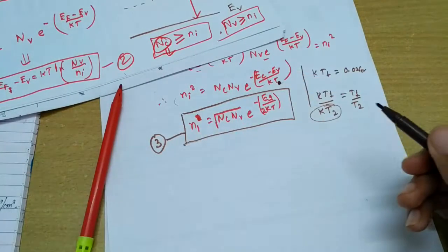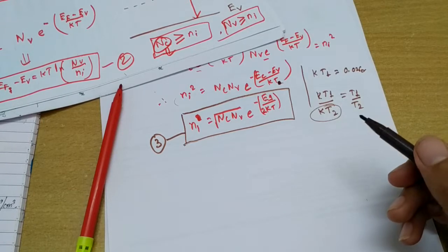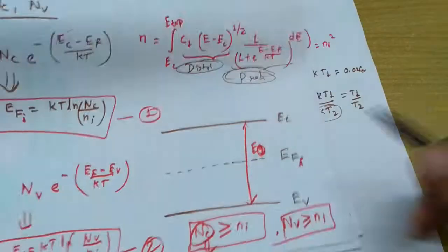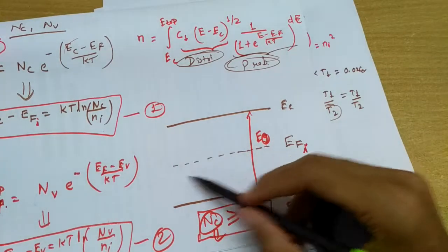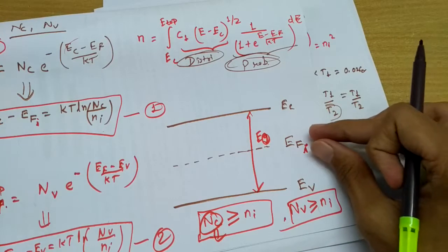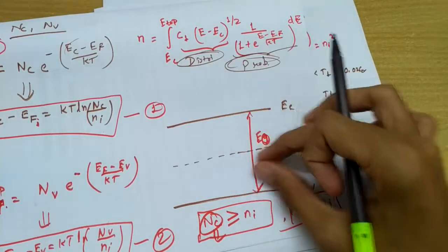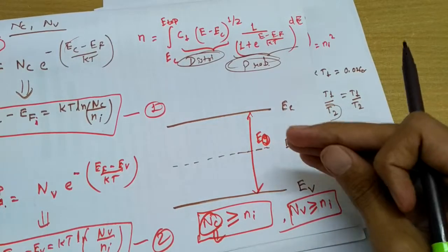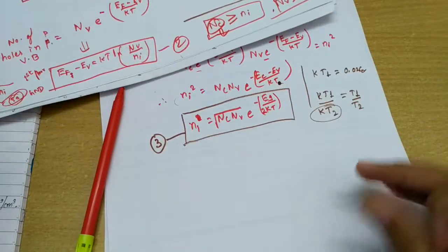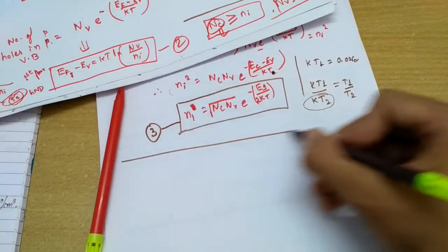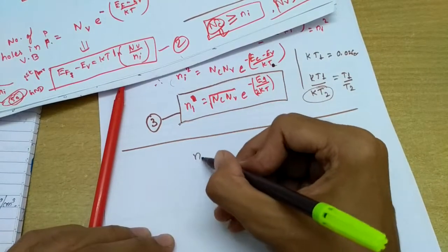Let's call that equation number 3. Now for one more important result: in an intrinsic semiconductor, the Fermi level efi appears to be at the center of the band gap, but it is actually slightly below the center. We will prove this mathematically.